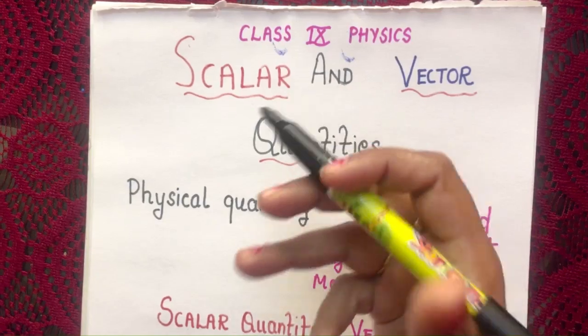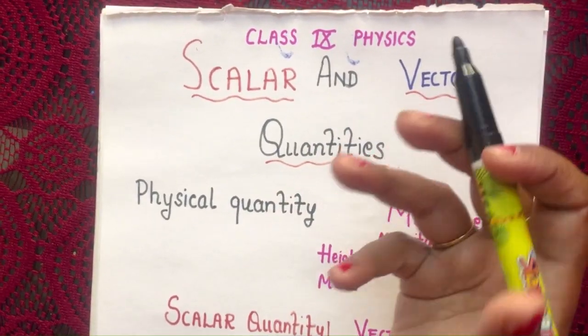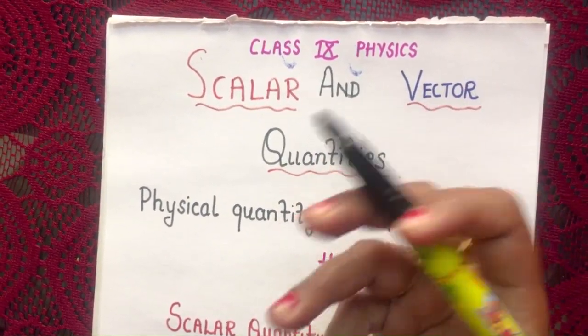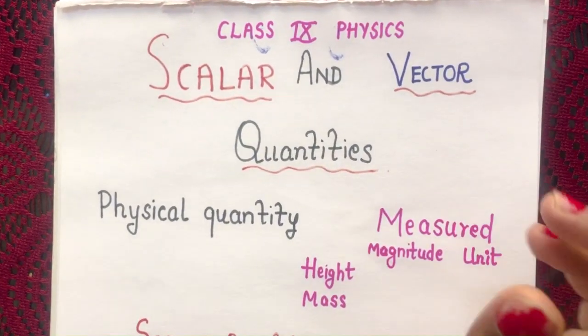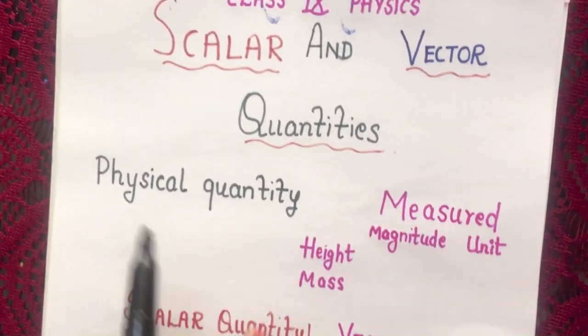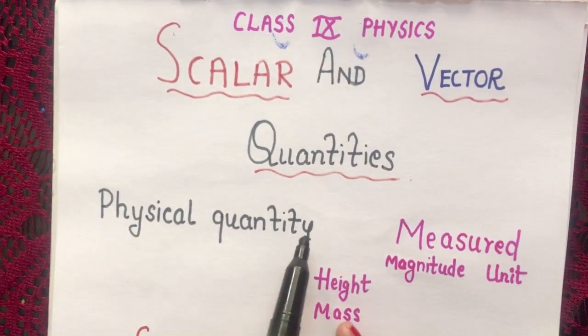In physics we frequently use the words scalar and vector quantities when describing any physical quantity. Now first of all we need to know what is a physical quantity.